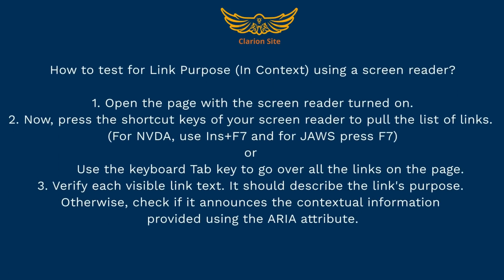How to test for link purpose in context using a screen reader. Step 1: Open the page with the screen reader turned on. Step 2: Press the shortcut keys of your screen reader to pull the list of links — for NVDA, use Insert plus F7, and for JAWS, press F7 — or use the keyboard Tab key to go over all the links on the page. Step 3: Verify each visible link text. It should describe the link's purpose. Otherwise, check if it announces the contextual information provided using the ARIA attribute.